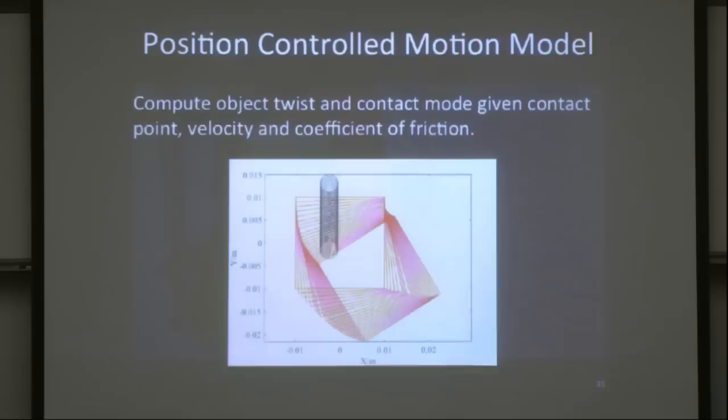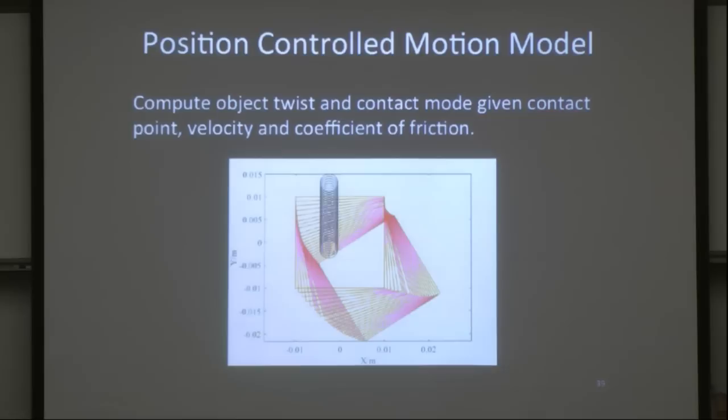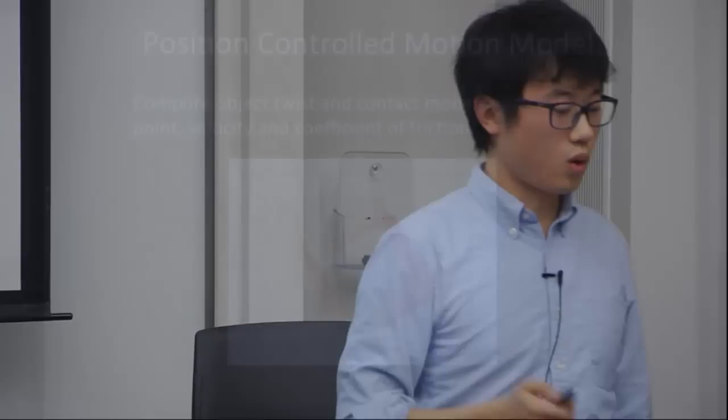The second application is a position-controlled motion model. In general, you don't have direct control over the applied wrench on the object, but we do have a precise robot for position control. The model answers: given where the robot contacts the object, the linear velocity at the contact point, and the coefficient of friction — tell me the resultant object twist and the contact mode: slipping, sticking, or breaking contact? We have recently proven that our numerical algorithm converges to the exact unique result.